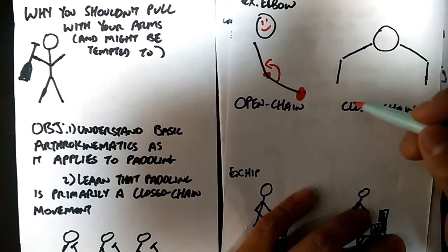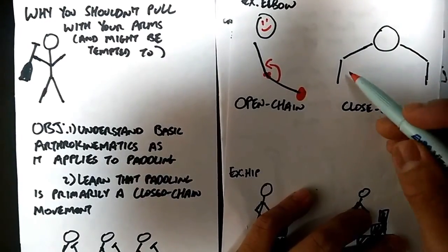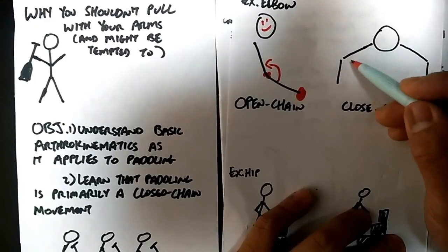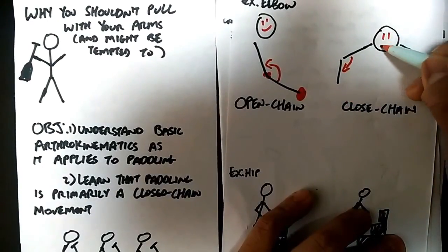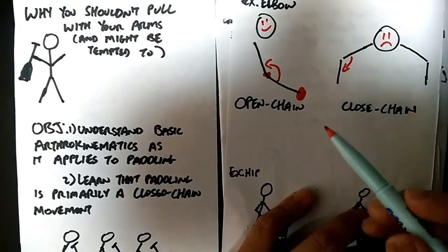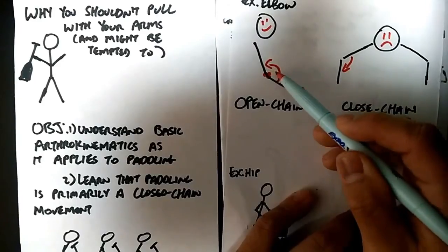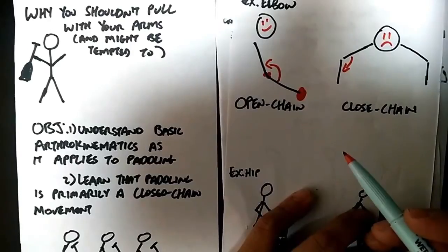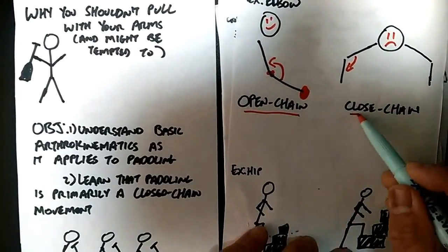Alright, so what about over here in a push-up? In a push-up, your arm over here, the humerus, is moving towards the forearm, right? And push-ups are hard, so you're set. The difference here, or I guess the similarity is that even though they're both moving towards one another and the angle between the elbow is closing, one is considered an open chain movement and the other is considered a closed chain movement.